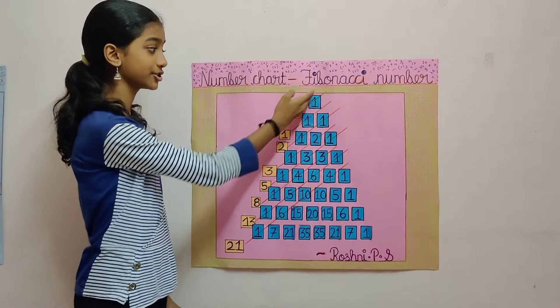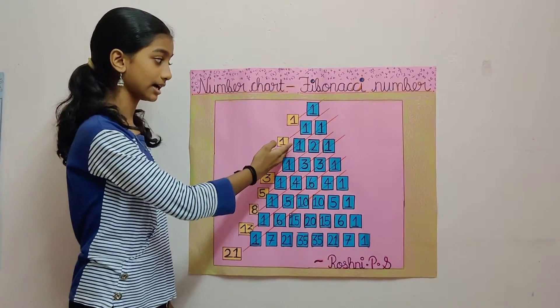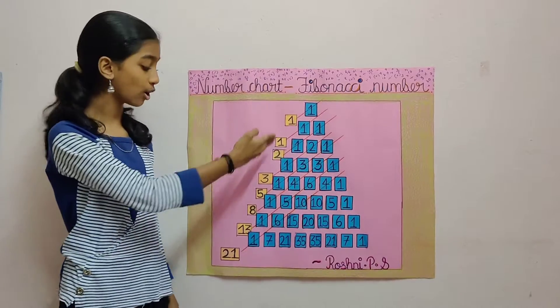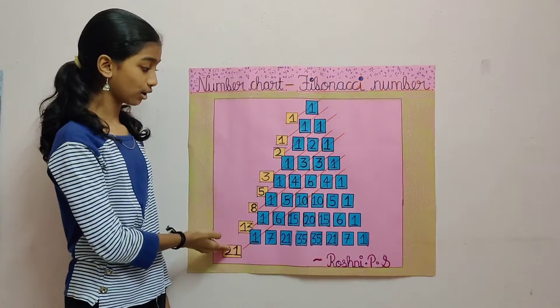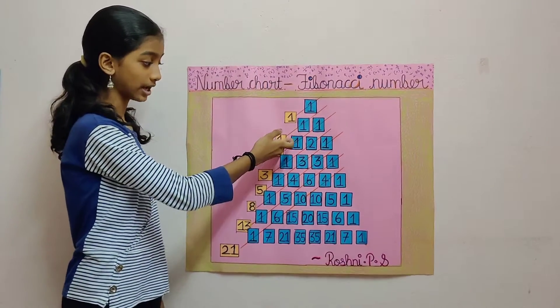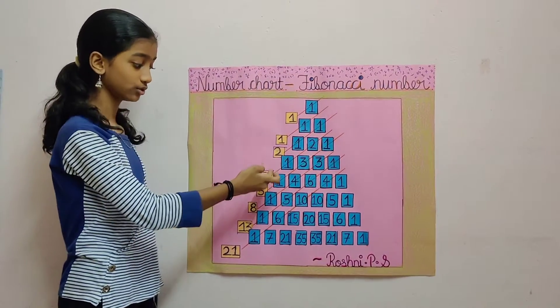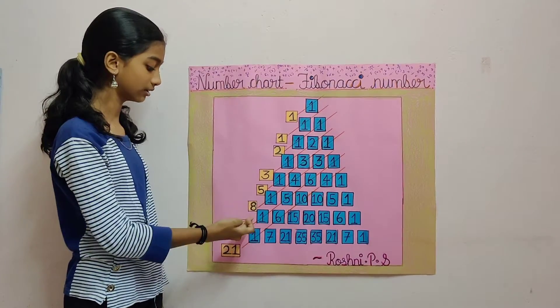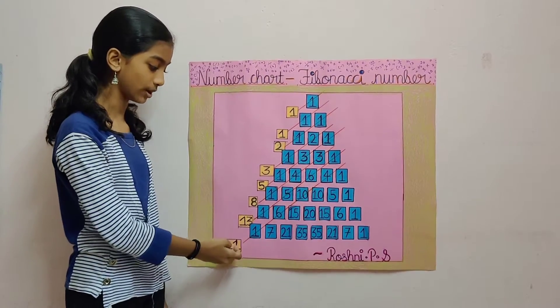I have made stripes on the diagonals and highlighted the sums in yellow. The Fibonacci numbers are: 1, 1, 2, 3, 5, 8, 13 and 21.